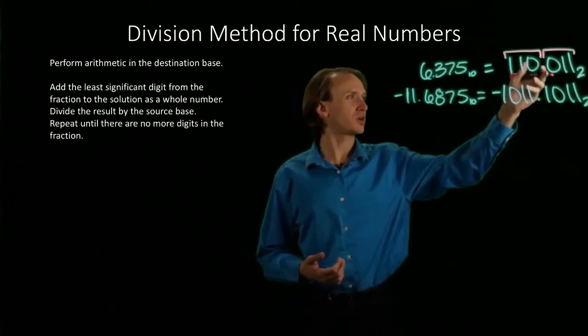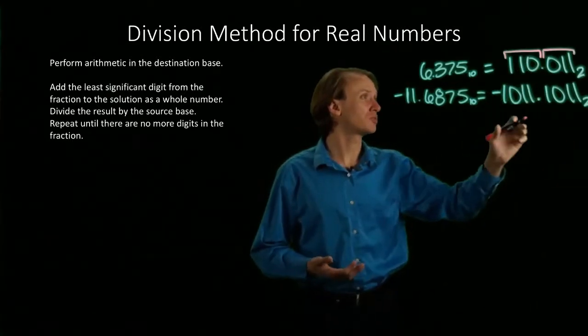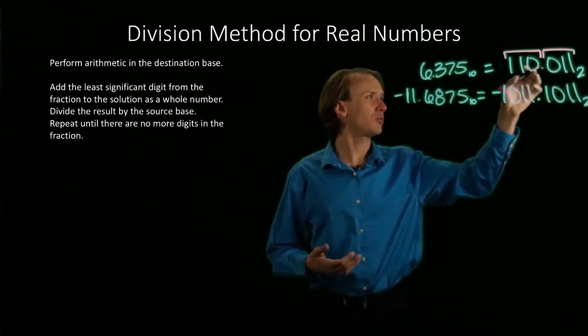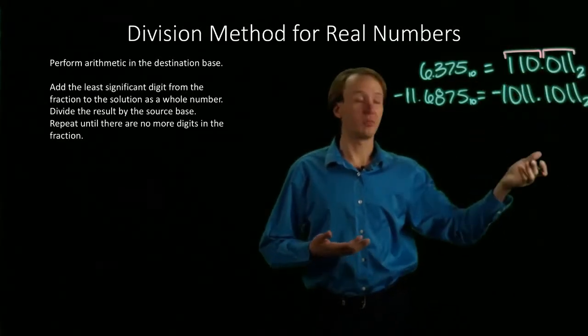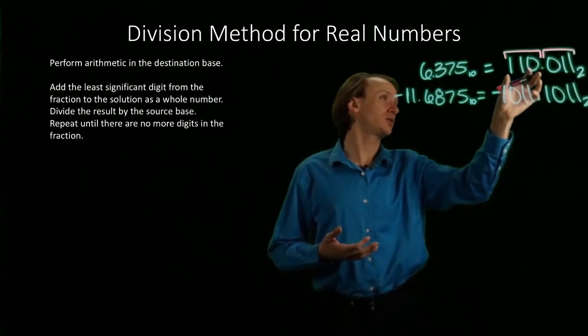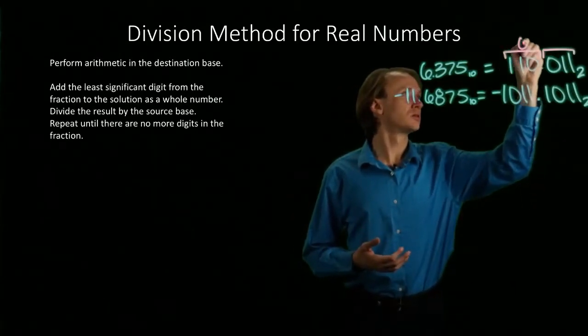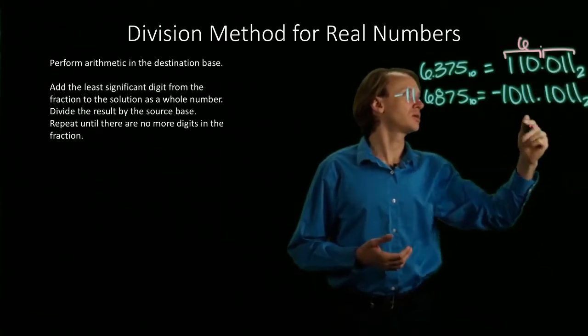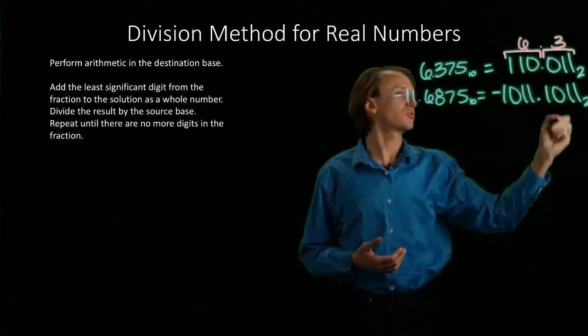To convert directly from a binary real number to an octal real number, I can just look at blocks of 3 as usual, but I'll be moving outwards from my binary point. So I get 110 is 6 in octal and 011 is 3 in octal.